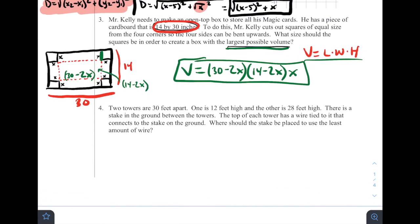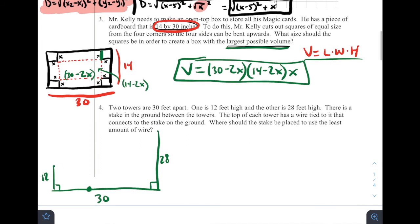Number four, two towers are 30 feet apart. So let's draw this out. So we've got some ground, we've got a tower, we've got another tower. Generally, buildings are perpendicular to the ground. So I'm going to add those little perpendicular symbols to the ground. And we know that they're 30 feet apart. One is 12 feet high. The other is 20 feet high. There is a stake in the ground between the two towers. So we don't know where it is. So I'll just put it maybe right there. The top of each tower has a wire tied to it that connects to the stake in the ground. So we've got one that's going here, one that's going here. Let's see, where should the stake be placed? So we could potentially move the stake in either direction along the ground. Where should the stake be placed to use the least amount of wire?